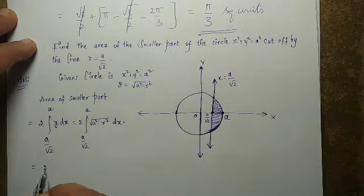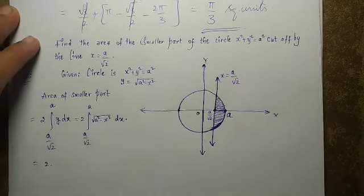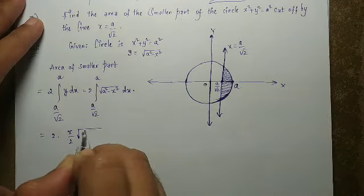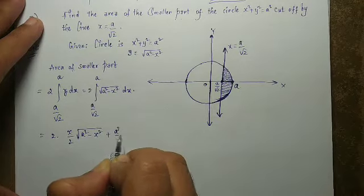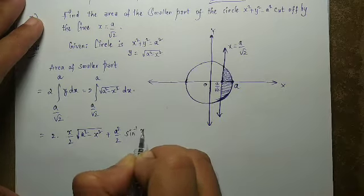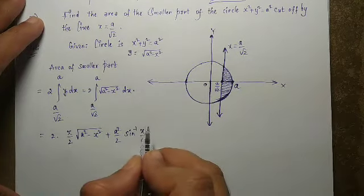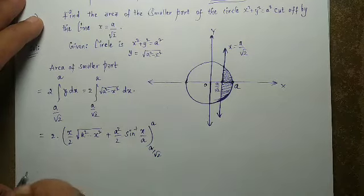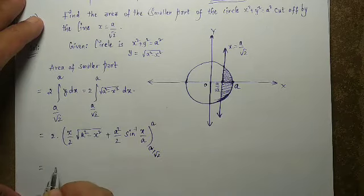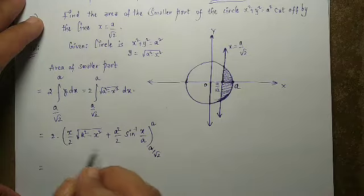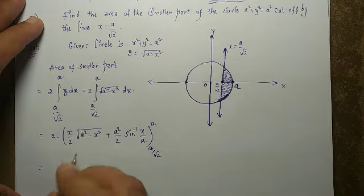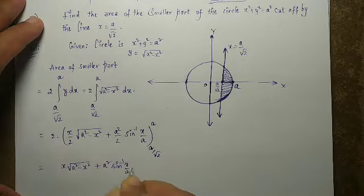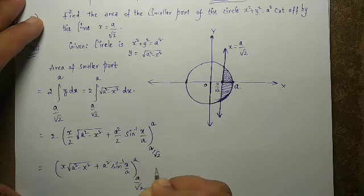Applying the standard formula: ∫√(a² − x²) dx = (x/2)√(a² − x²) + (a²/2) sin⁻¹(x/a). So the expression becomes 2 × [x√(a² − x²) + a² sin⁻¹(x/a)] evaluated from a/√2 to a.